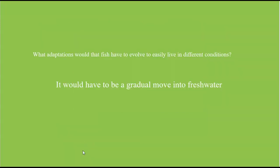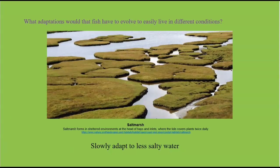Moving on to question two: what adaptations would that fish have to evolve to easily live in different conditions? It would be a gradual move into freshwater. First, the small fish would hide in the intermediate zones between the ocean and freshwater, like the salt marshes. It is still salty water, but reduced — not too difficult to adapt to.